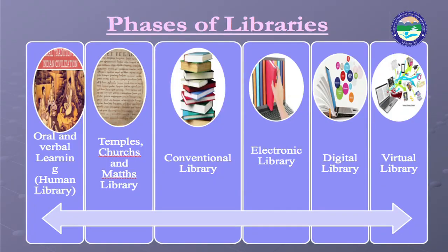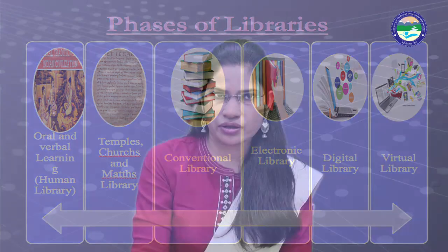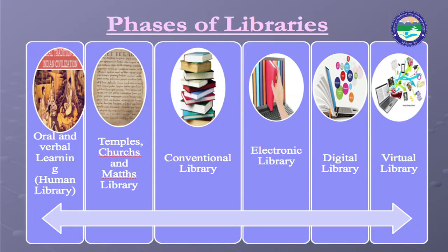The fourth phase is the Electronic Library. In the electronic library, information is obtained through electronic devices like TV, radio, and DVDs, in the form of text, sound, graphics and motion videos. For example, Prishi Darshan and Gyanvani are programs on radio, and Tarang and many other educational channels are broadcasted on television.